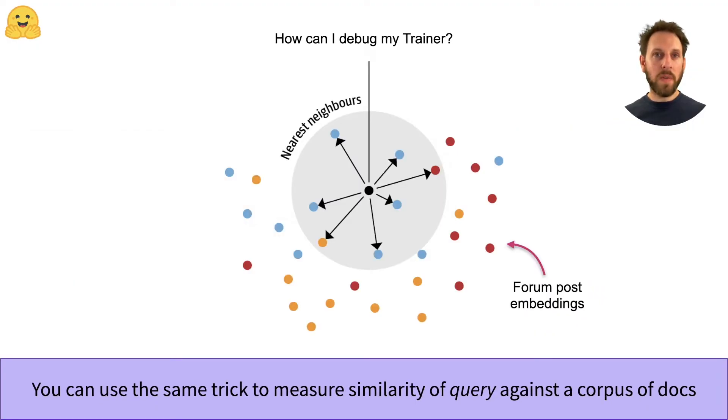We can actually take this idea one step further by comparing the similarity between a question and a corpus of documents. For example, suppose we embed every post in the Hugging Face forums. We can then ask a question, embed it, and check which forum posts are most similar. This process is often called semantic search because it allows us to compare queries with context.